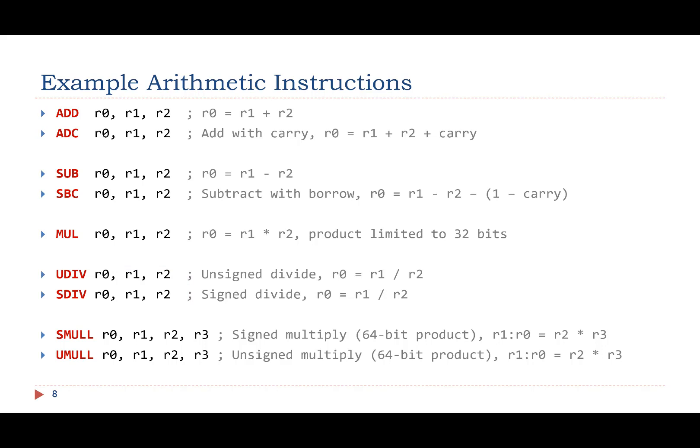For multiply, if the product is not limited to 32 bits, signed multiply and unsigned multiply also work differently. Therefore, we have signed and unsigned multiply instructions for obtaining a 64-bit product.